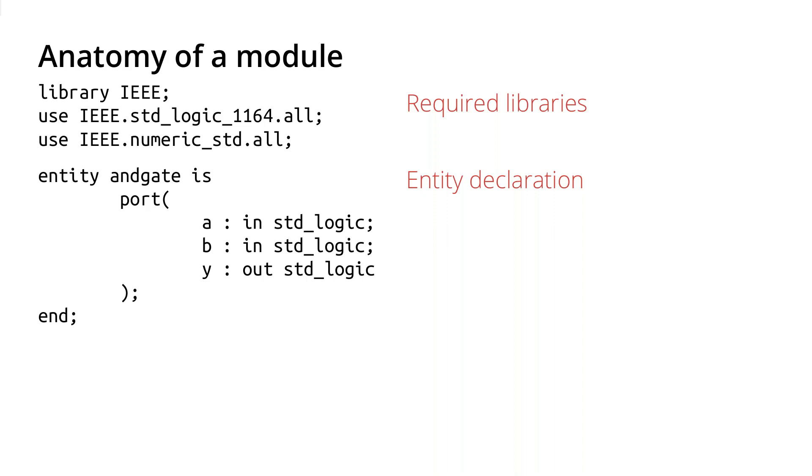With this entity we can think about its ports. It has three ports here: A, B, and Y. A and B are specified to be inputs, and then Y is an output. Any time you see an entity declaration, you should think about it. We're just defining some box.